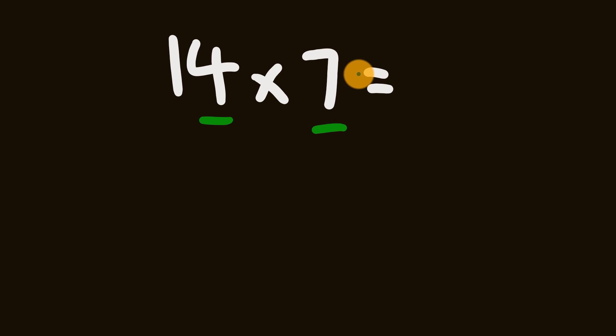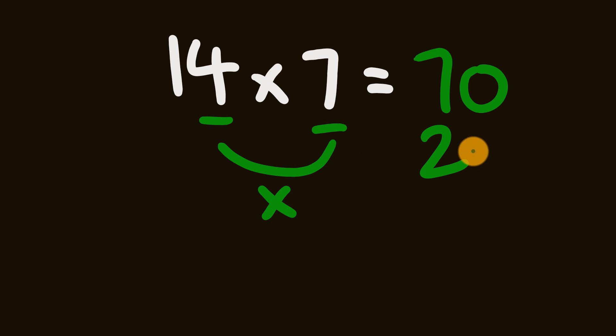You can probably work out why. 7 times 10 is equal to 70. Then what we're going to do is multiply these two units digits together. 7 times 4 is equal to 28, and once again we add that on. We have our answer: 70 plus 28 is equal to 98.